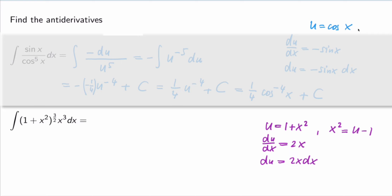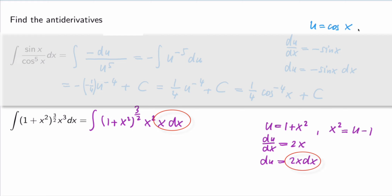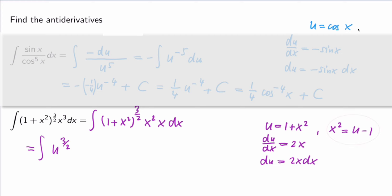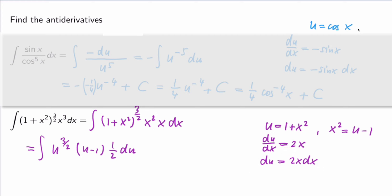I use a trick and rewrite the integrand as (1+x²)^(3/2)·x²·x dx. Now x dx appears, and from our substitution x dx = du/2. The x² can be replaced by u−1. So the integral becomes ∫u^(3/2)·(u−1)·(1/2) du.